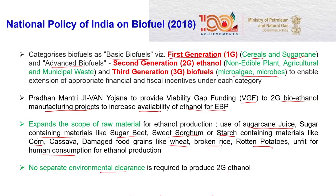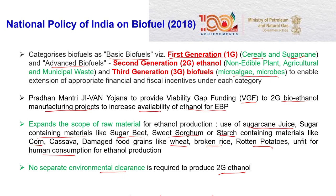Another important guideline is there is no separate environmental clearance required to produce 2G ethanol. These are the four different outcomes of the policies. What are the incentives? If the policy is made, naturally there should be some incentives, which can be clubbed into three different parts.